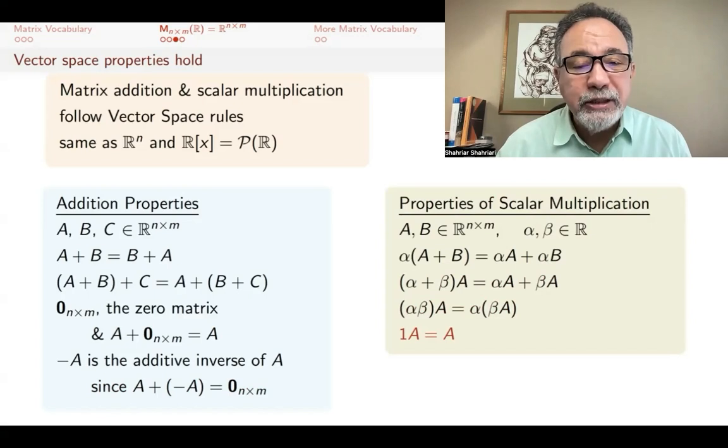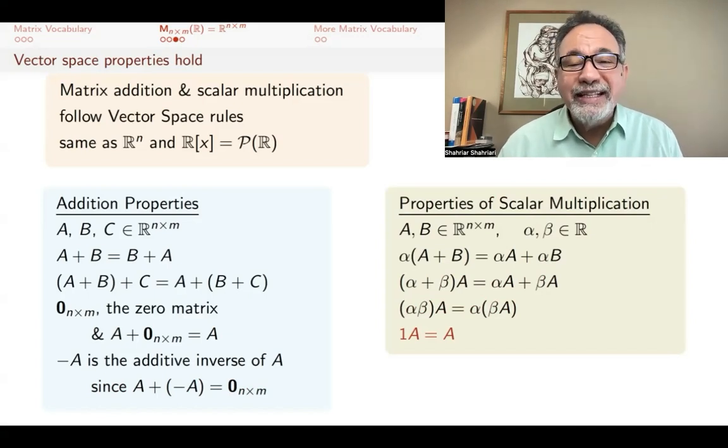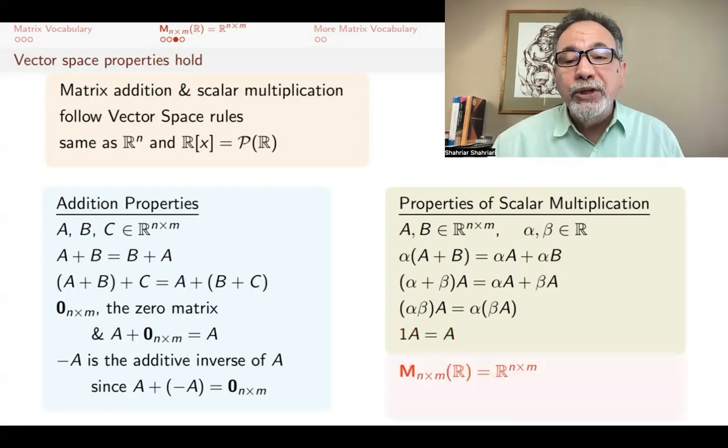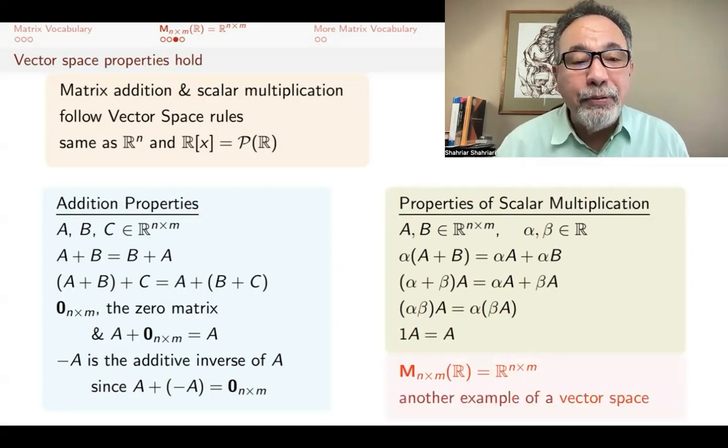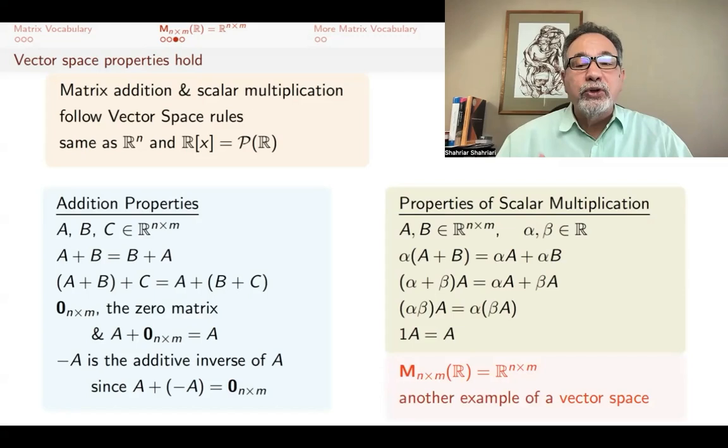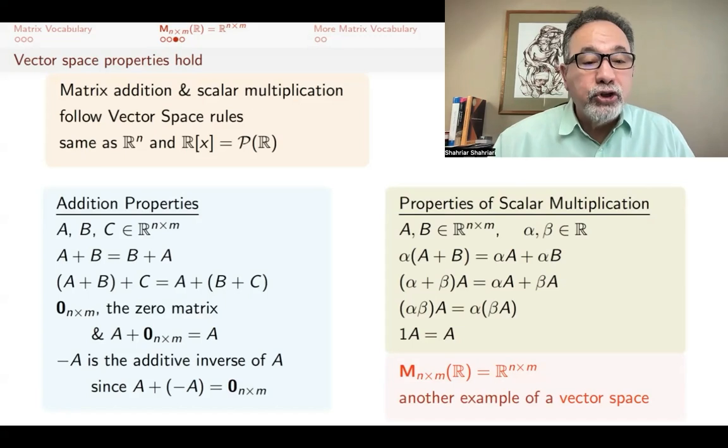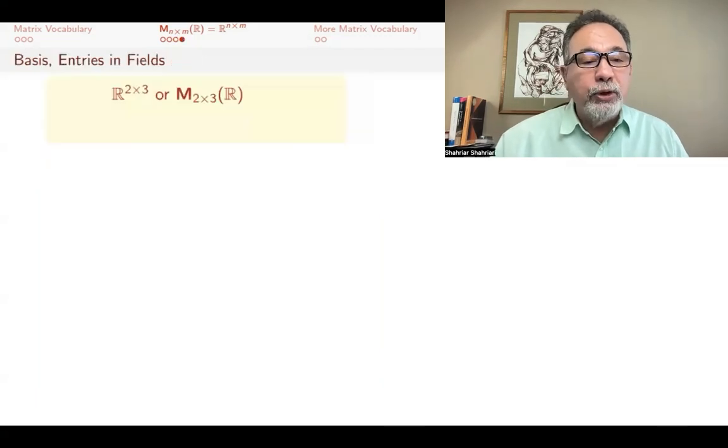One could write down a proof of these, but they are pretty clear. It's not really clear that these are that profound, that they will buy you anything, but they actually will. Because of this, we know that n by m matrices, the world of n by m matrices, is another example of a vector space. Therefore, when we study vector spaces in abstract, we can apply whatever we learn to matrices as well as to n-tuples and polynomials.